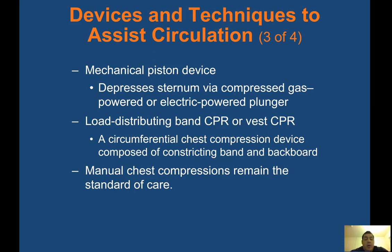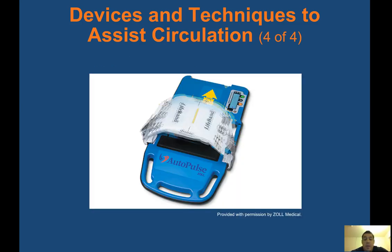Depending on the department you work for, they may have their own CPR devices that reduce issues with poor compression quality or inadequate rescuer rotation. The AutoPulse is one such device: a backboard-like base goes underneath the patient and a white band goes over the chest, providing consistent compressions. It must be placed correctly and it also frees up an additional rescuer.